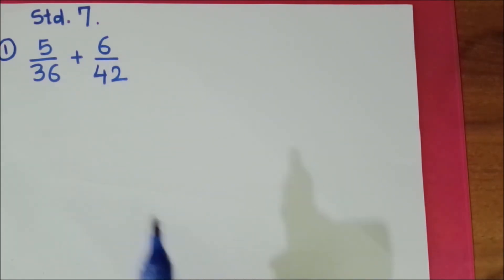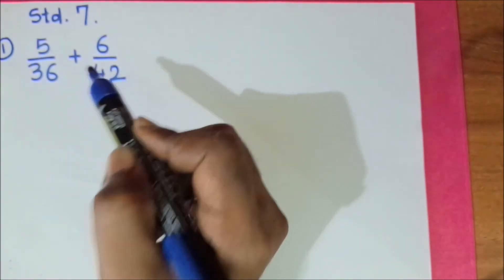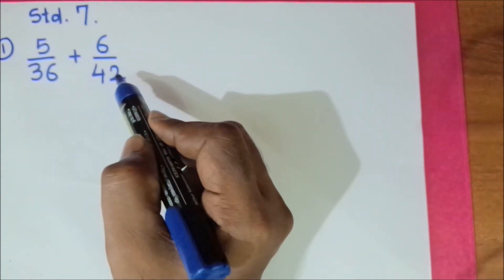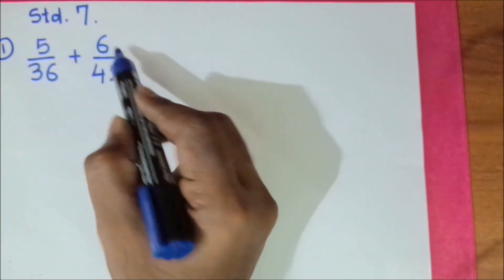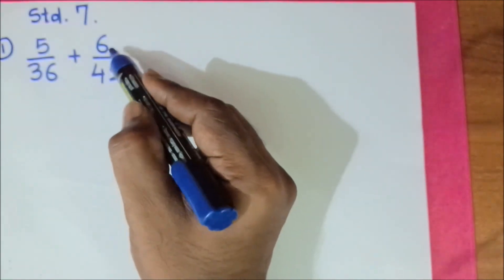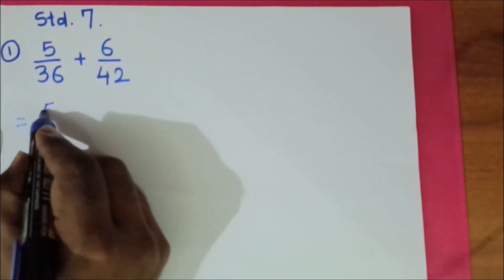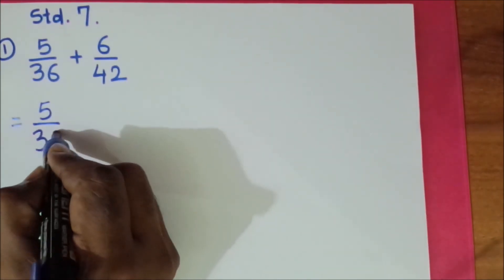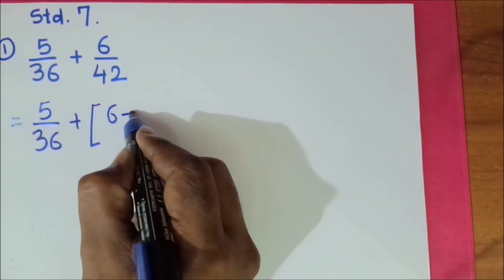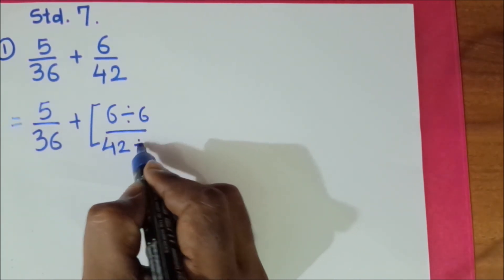First question is 5 upon 36 plus 6 upon 42. If we observe this second fraction, 6 upon 42, it's divisible by 6. So first we will bring this fraction to its lowest form. We will divide by 6: 5 upon 36 plus 6 divided by 6 upon 42 divided by 6.